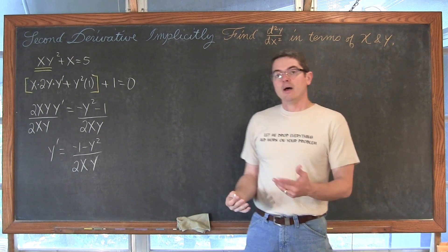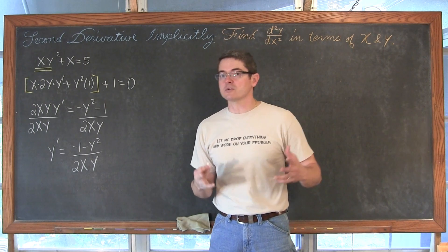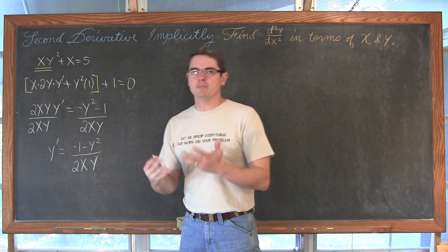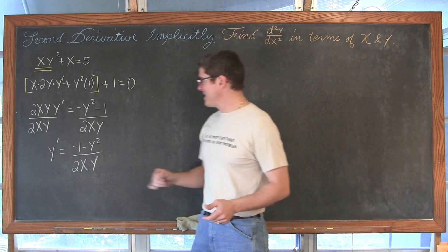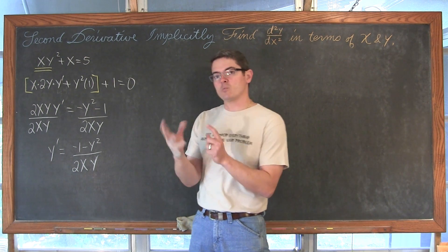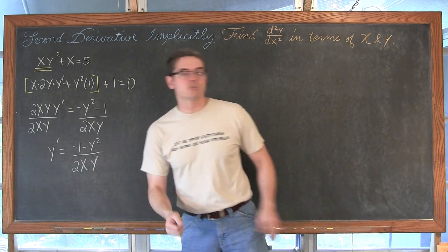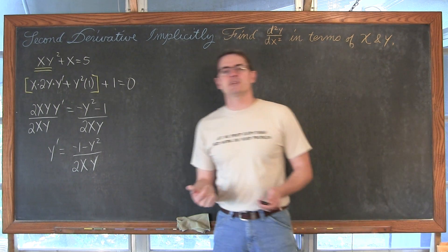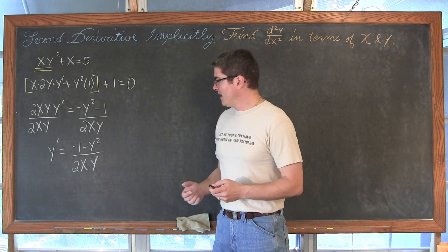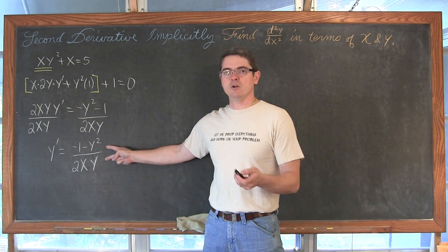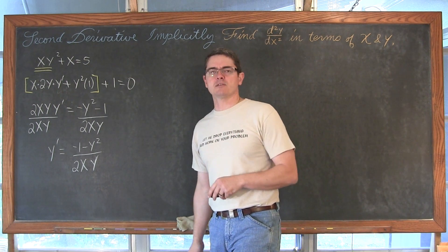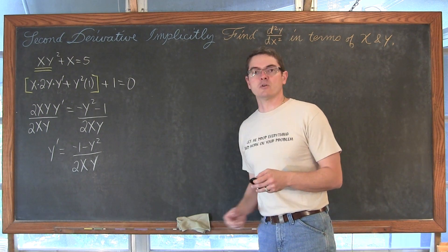Now we are going to find the second derivative — we need to be really careful with our algebra here, there is a lot of it. We will have to use the quotient rule, and because the denominator is 2xy we will also need to remember to use the product rule within that work. You should be able to pause the video and walk through this and practice your derivative skills. I will explain it when we are done, and you can pause at any point if you get stuck.